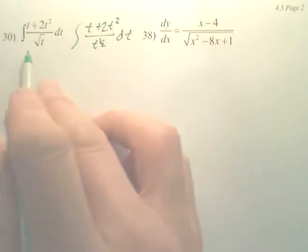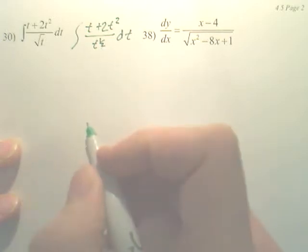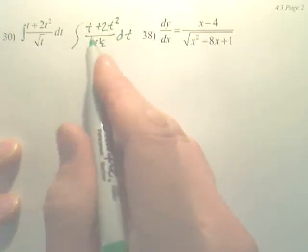First you want to rewrite the square root of t as t to the 1 half. Then do you see how you can basically divide both pieces by t to the 1 half?